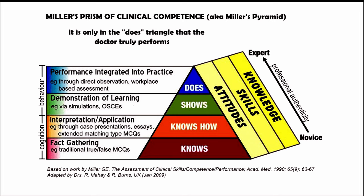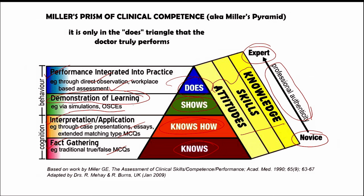We move on to Miller's prism of clinical competence, which has two dimensions: the domains — knowledge, skills, and attitude — and the levels: knows, knows how, shows and does. In knows, there is fact gathering, assessed using traditional true/false or MCQ assessments. In knows how, there is interpretation or application through case presentations, essays, and extended matching MCQs. Shows involves demonstration of competence, assessed via simulations and OSCEs. Does involves performance integrated into practice, assessed using direct observation and workplace-based assessment. At the base of Miller's prism is the novice, who becomes an expert through professional authenticity at the tip.